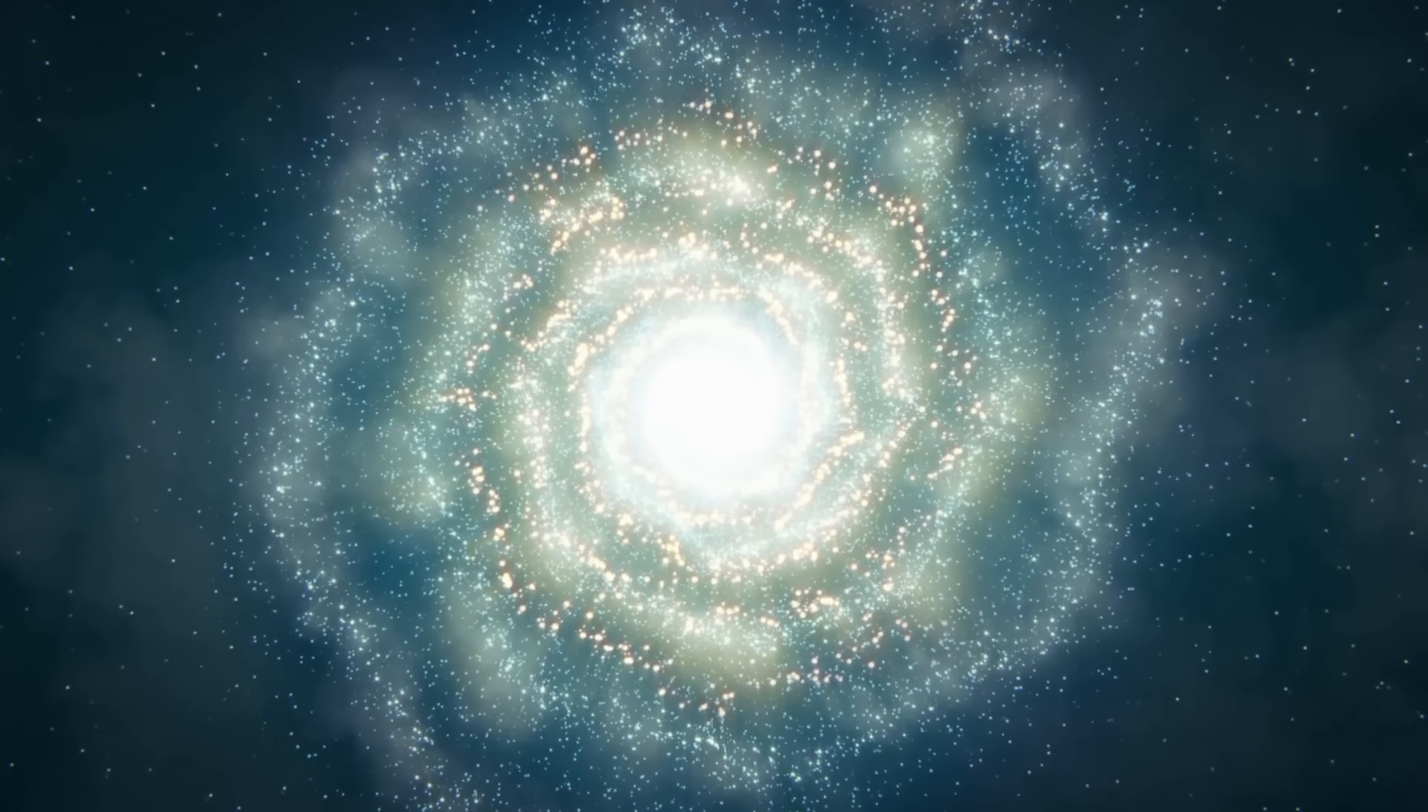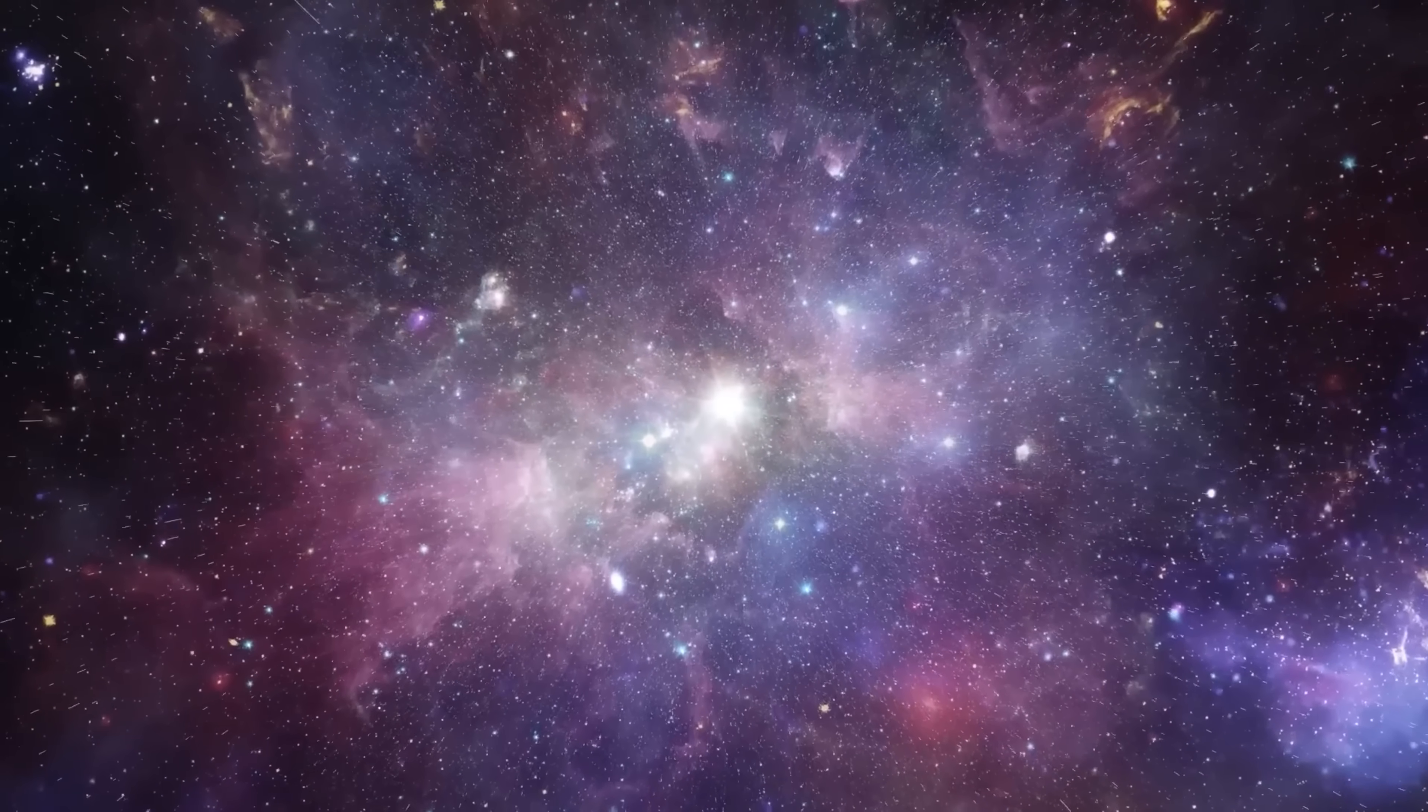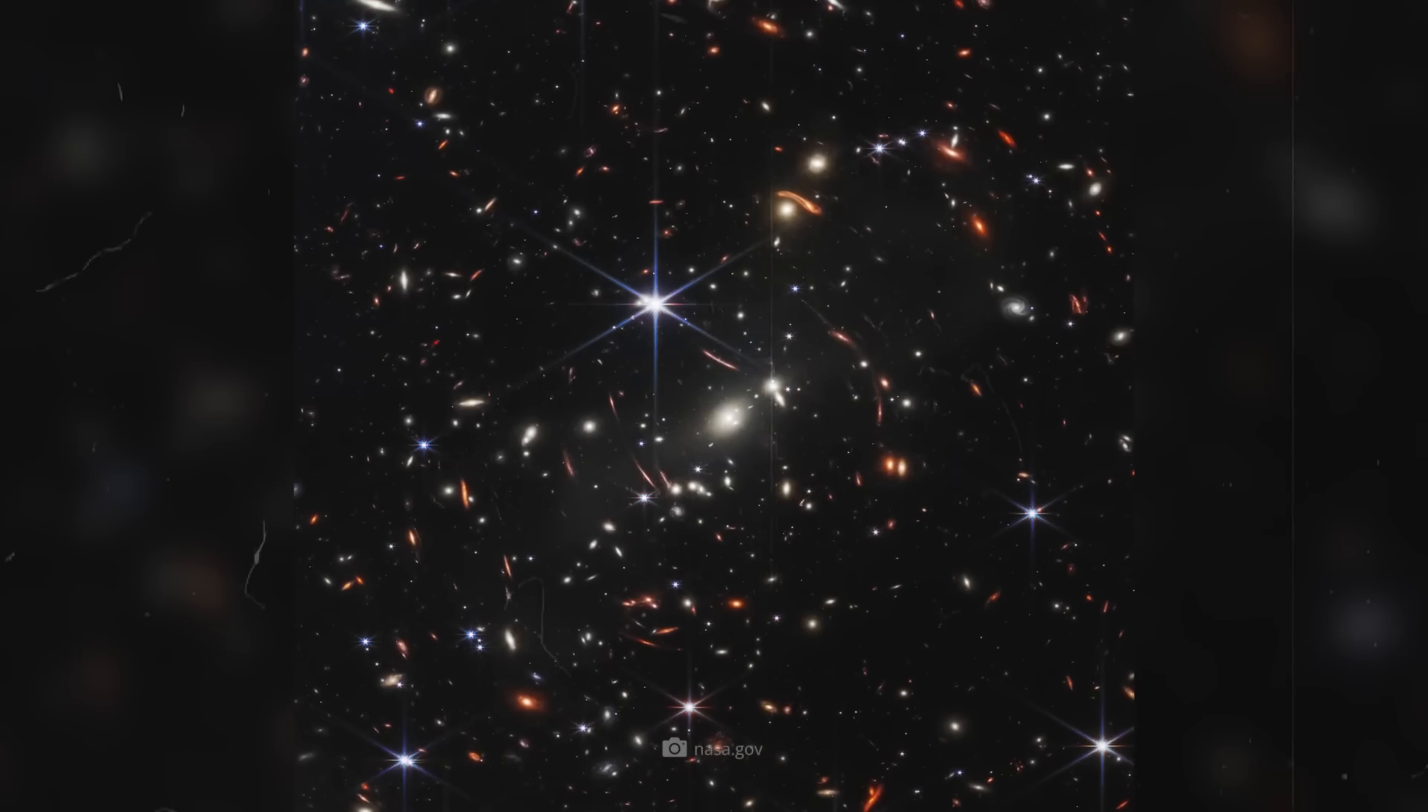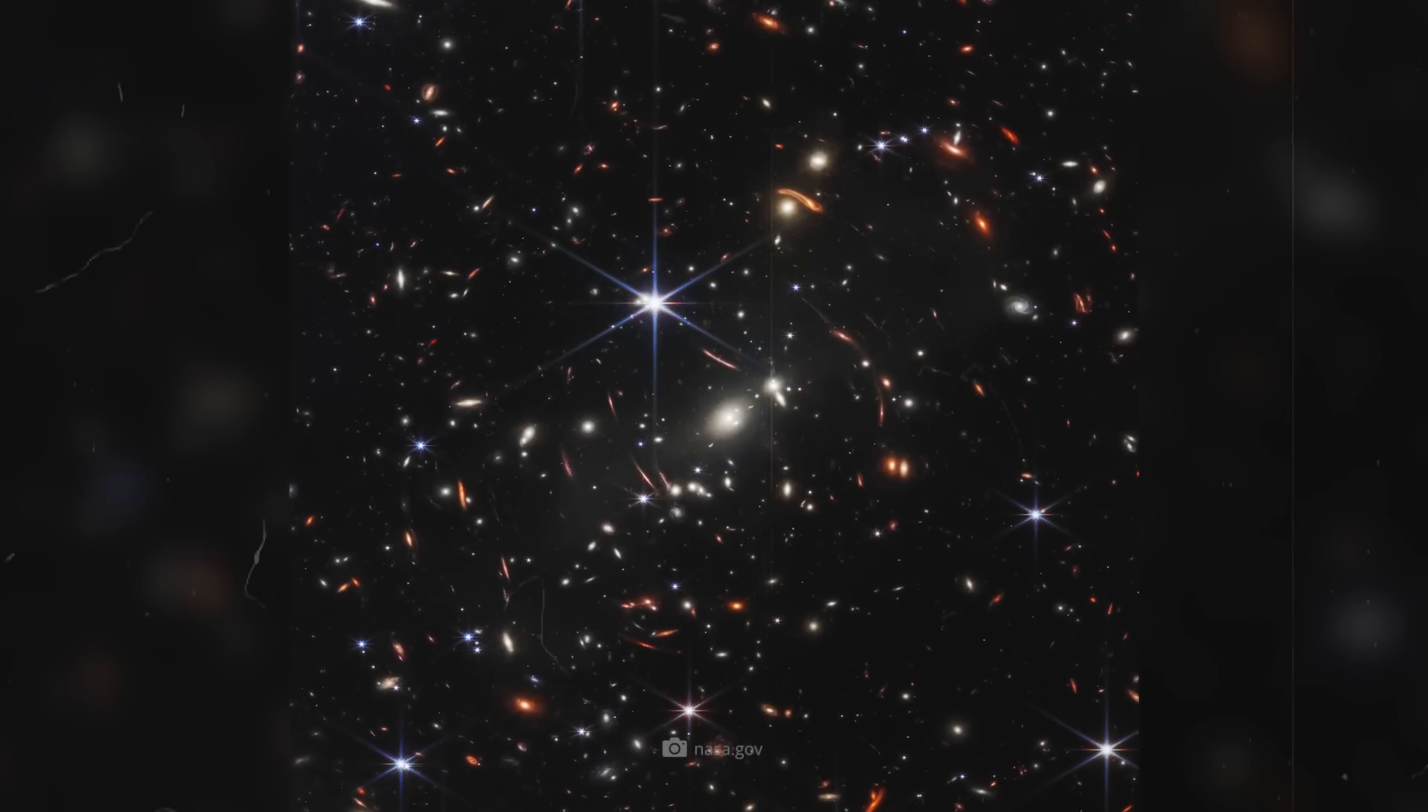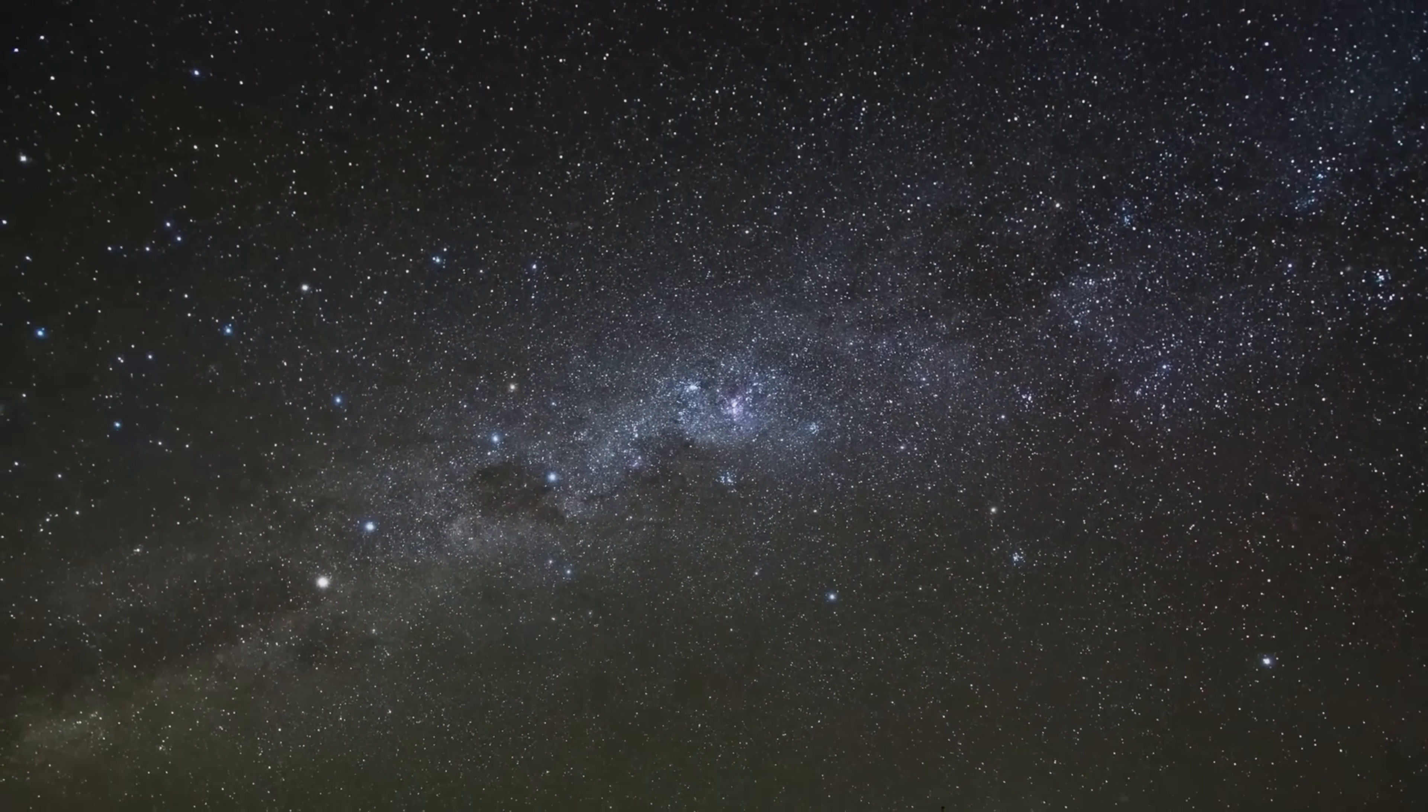Let's unpack that. In the large-scale structure of the universe, stars form galaxies, galaxies form clusters, and those clusters form superclusters. These aren't just randomly scattered like seeds in space. They're arranged in an immense, interconnected cosmic web.